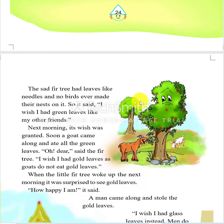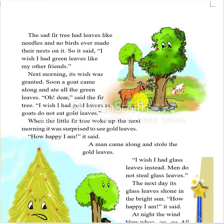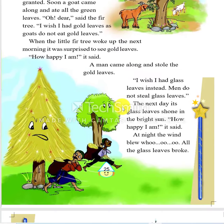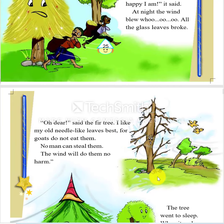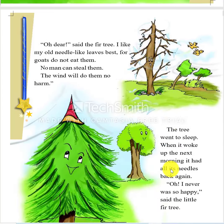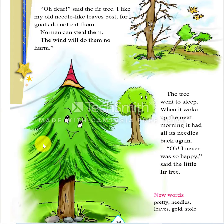The tree was not happy with its needle-like leaves. It wanted green leaves as its first wish, but gods ate all the green leaves. It wanted gold leaves as its second wish, but thieves stole the gold leaves. It wanted glass leaves as its third wish, but all the glass leaves broke because of a strong wind. Then it wanted its needle-like leaves back as its fourth wish. At last, the fir tree realized that one should be happy with what God has blessed one with.